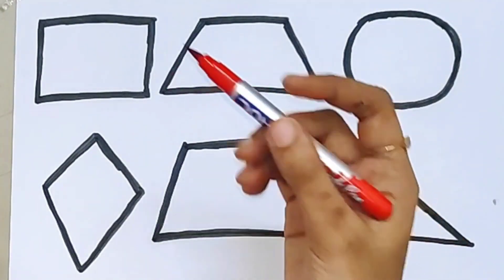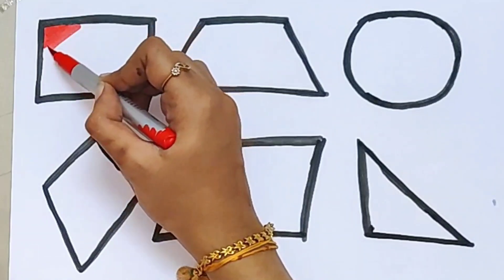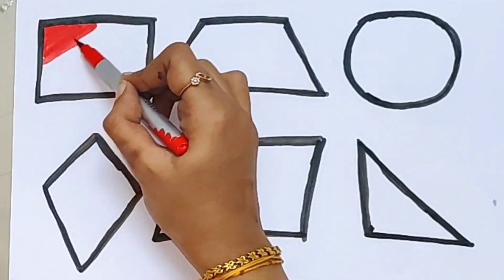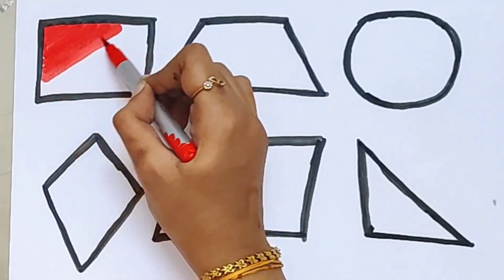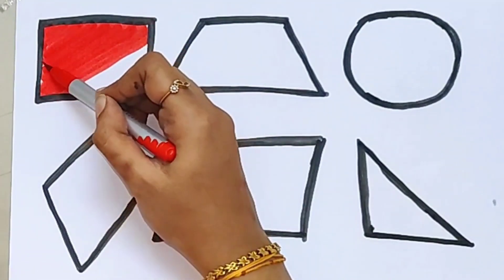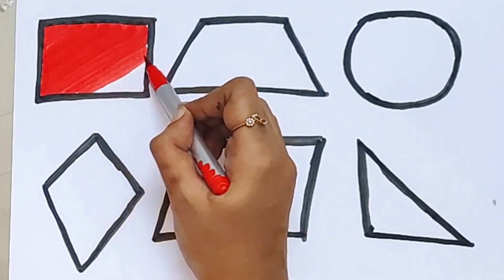Now it's coloring time. Red color. What color is this? Red color. This is a red color square.